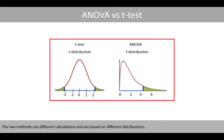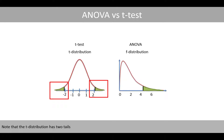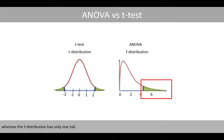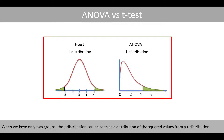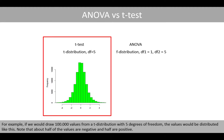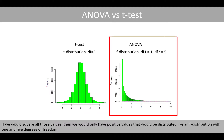The two methods use different calculations and are based on different distributions. Note that the t-distribution has two tails, whereas the F-distribution has only one tail. When we have only two groups, the F-distribution can be seen as the distribution of the squared values from a t-distribution. For example, if we would draw 100,000 values from a t-distribution with five degrees of freedom, the values would be distributed like this. Note that about half of the values are negative and half are positive. If we would square all those values, then we would only have positive values that would be distributed like an F-distribution with one and five degrees of freedom.